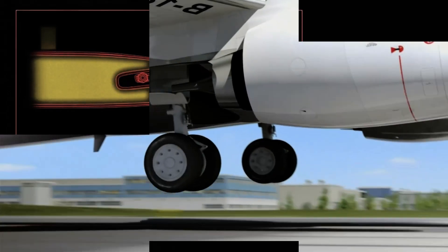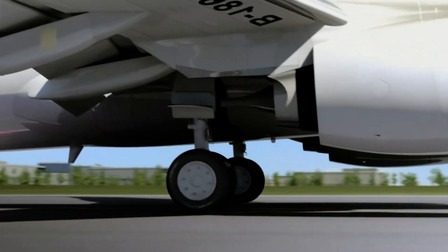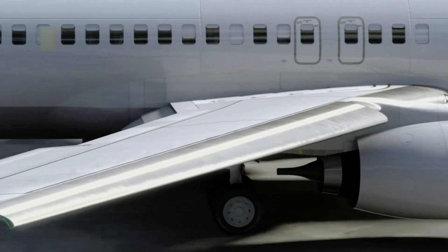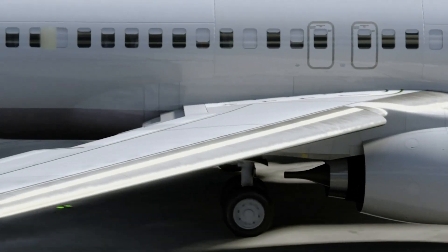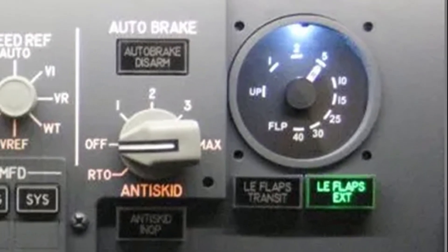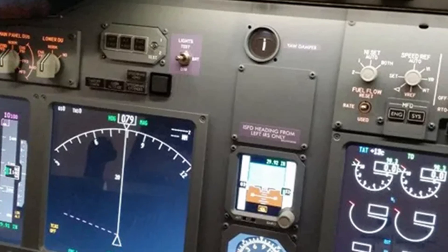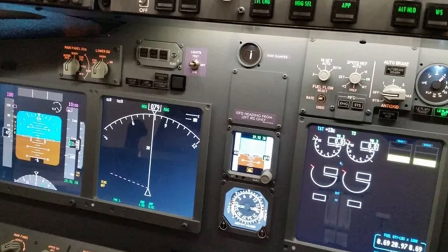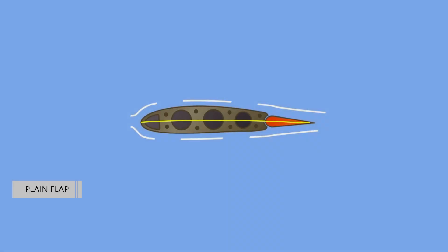They enable landing at slower speeds and shorten the amount of runway required for takeoff and landing. The amount that the flaps extend and the angle they form with the wing can be selected from the flight deck. Typically, flaps can extend up to 45 to 50 degrees. There are various kinds of flaps.